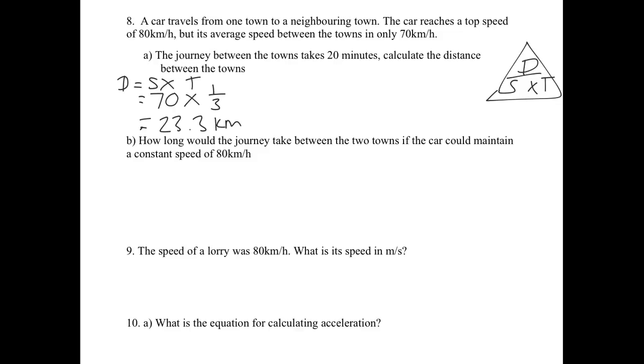Part B. How long would the journey take between the two towns if the car can maintain a constant speed of 80 km per hour? So how long is a time value? I'm going to look at my formula triangle, and time is calculated by doing distance divided by speed. I just worked out that the distance is 23.3 km away. The speed, we've been told, is 80. So let's just divide those together. And the answer is 0.29 hours. And just to show that you can convert that into minutes, times it by 60 to get 17.5 minutes. So that's how long it would take. Make sure that your answer is sensible. Well, it's taken 17.5 minutes when it's going faster, which is what you'd expect, because it took 20 minutes when the car was averaging 70 km per hour.